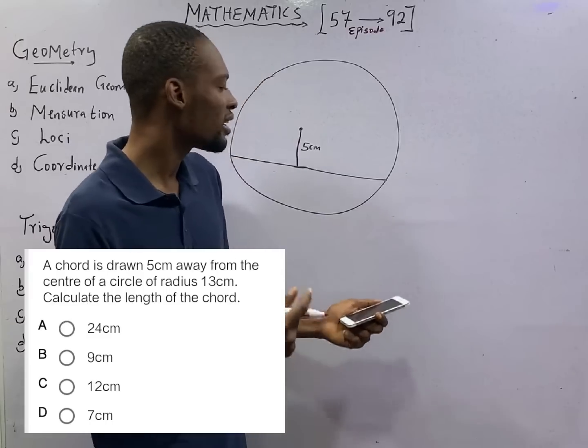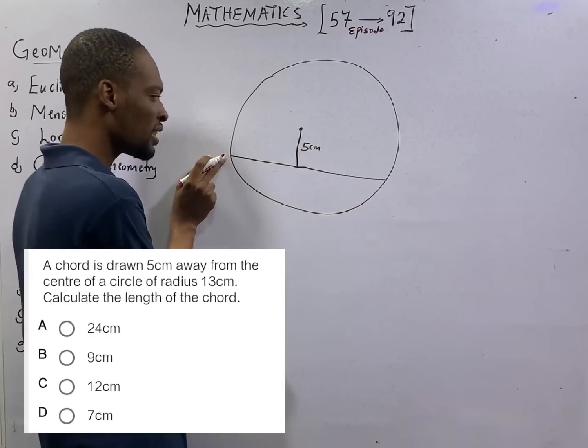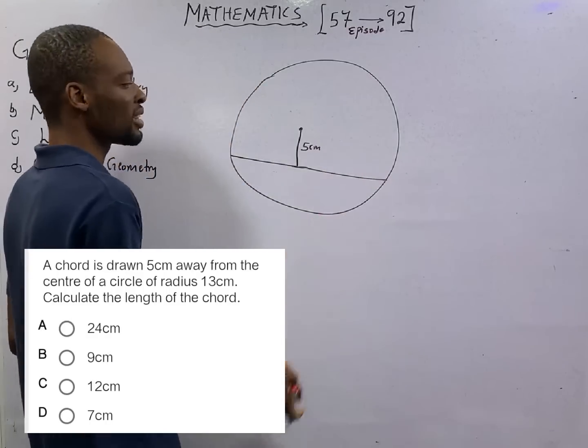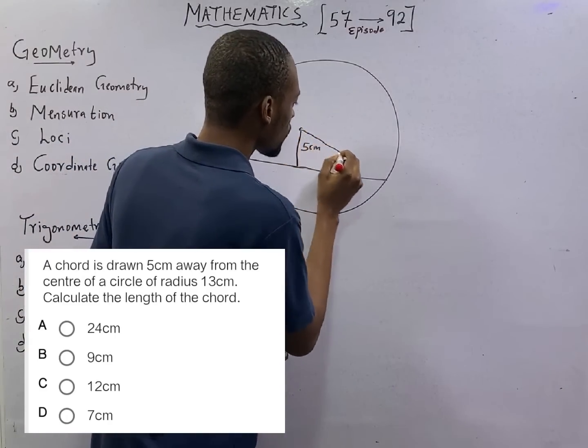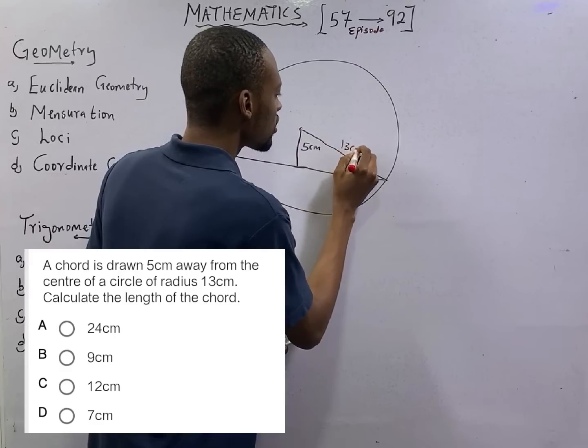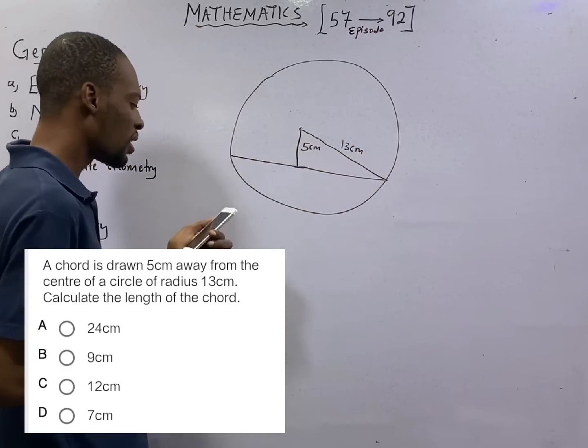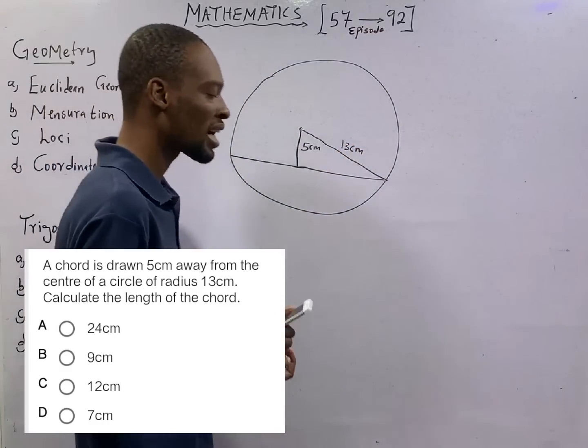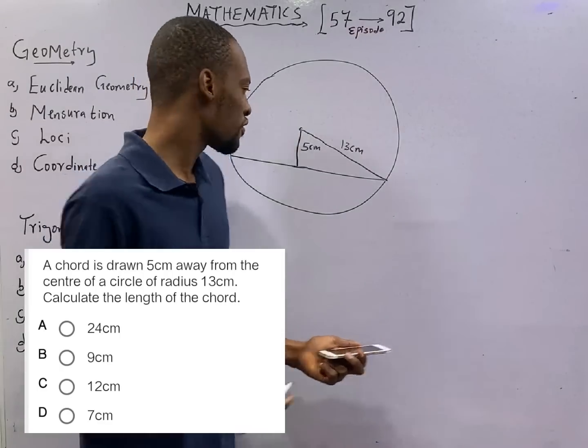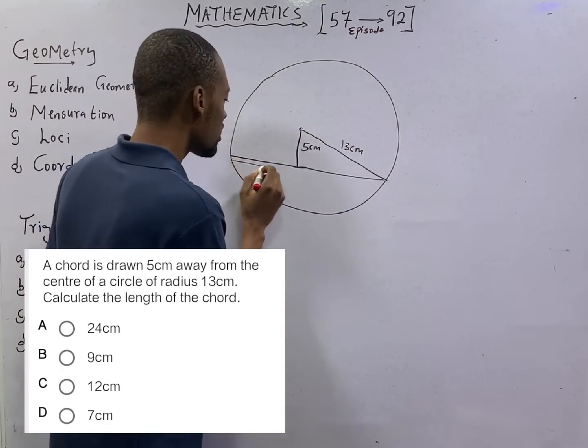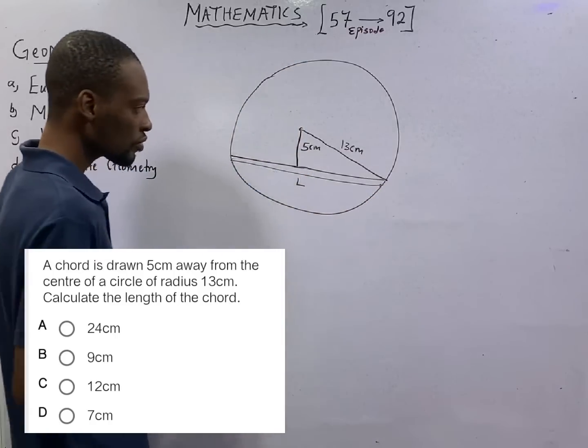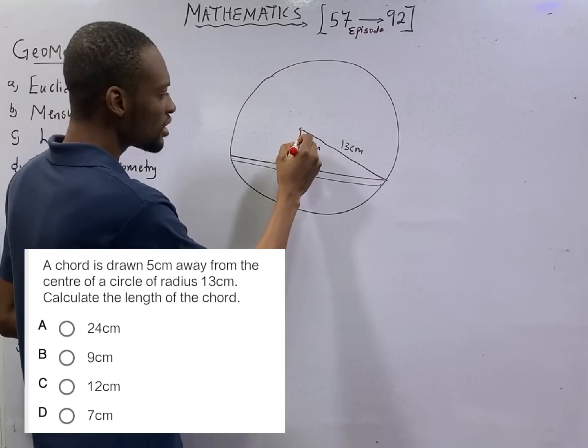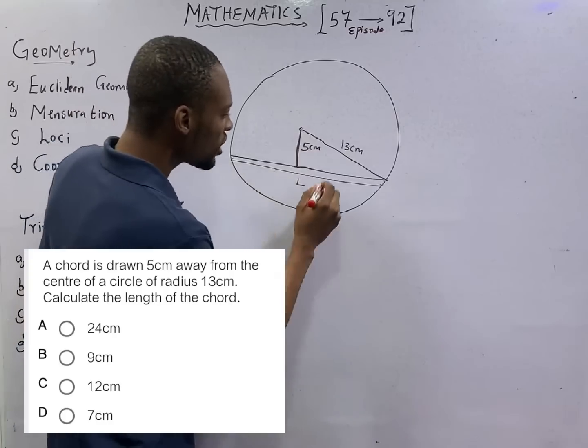What is the radius? A line from the center to any point on the circle. So from here to here, the radius is 13 centimeters. The length of the chord is what we are asked to find. If here is the center of the circle, and we know this length here, let's call it S.